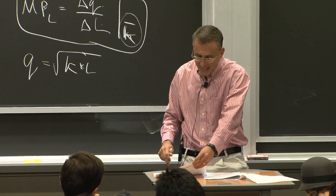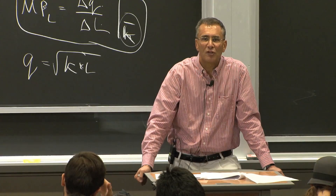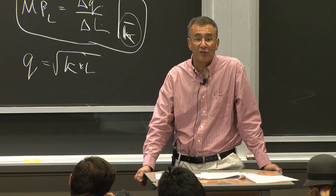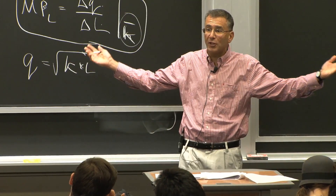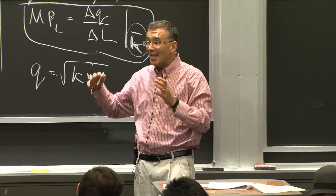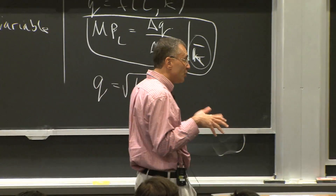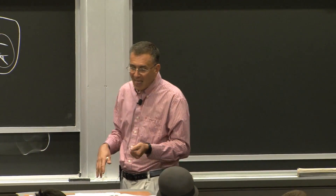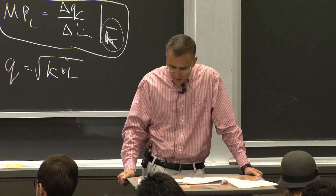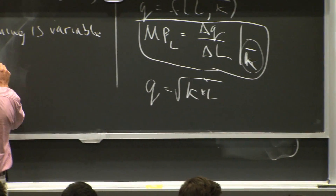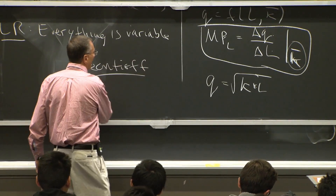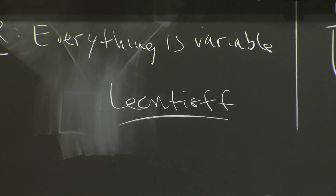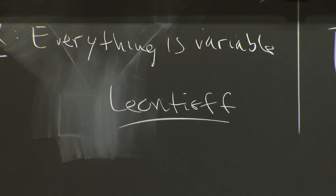Likewise, you could think about a case of completely non-substitutable inputs. The classic example is cereal in a cereal box. Given one cereal box, there's a certain amount of cereal that fits. You can produce ten times as much cereal, but there's nothing to do with it — you only have one box. Conversely, extra boxes do no good if you only have cereal for one. These are perfect complements, often called the Leontief production function, of the form min(A, 2B) — the production function is the minimum of the two inputs.